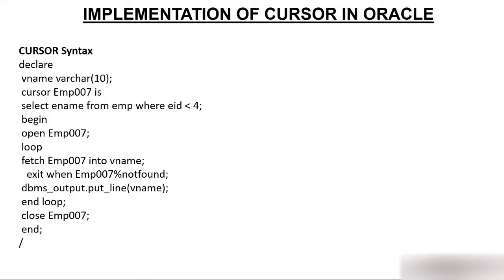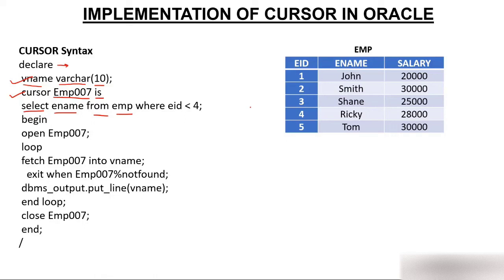There is a cursor syntax — let's see what we are trying to do here. We have a declaration section and in that section we are creating a variable called vname, with data type varchar and size 10. In the declaration section we have two things: a variable, and after that a cursor. We are creating a cursor and the name of this cursor is imp007 — you can give any name. We use 'IS' followed by a SELECT statement: select ename from the imp table where eid is less than 4.